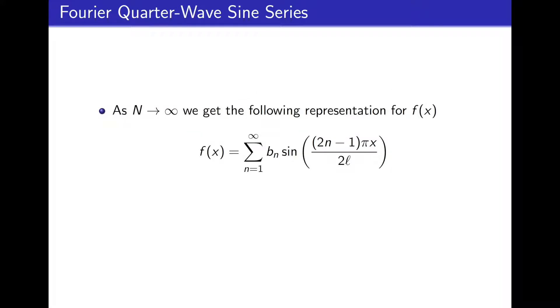Finally, we have what happens as n gets bigger and bigger and goes off to infinity. We get the following representation of the function f as a linear combination of the eigenfunctions. And this representation is called the Fourier quarter-wave sine series of f. This is equal to f in the mean square sense, just as the Fourier sine series was equal to f in the mean square sense that we talked about in class.